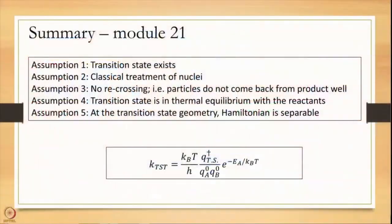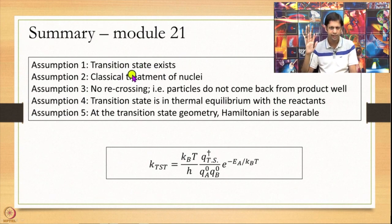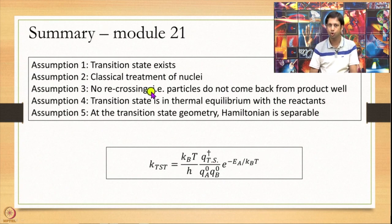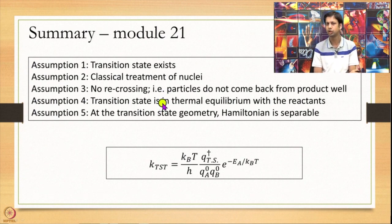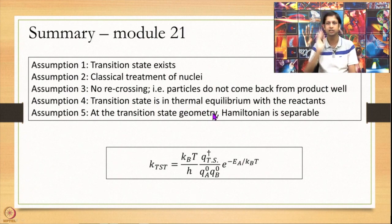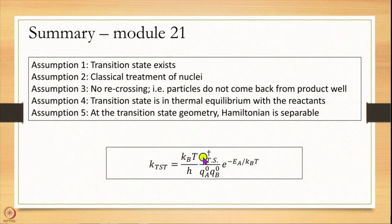In summary, we have made 5 assumptions in deriving transition state theory: (1) the transition state exists — this is the basis of the theory; (2) nuclei are treated classically; (3) there is no recrossing — once you go from transition state to product you do not come back, which is one of the most serious assumptions; (4) the transition state is at thermal equilibrium with reactants, which is usually a very good assumption; and (5) at the transition state geometry, the Hamiltonian is separable along the reaction coordinate and all perpendicular coordinates. Under these five assumptions, the rate constant is given by k = (k_BT/h) × (Q_TS†/(Q_A°·Q_B°)) × exp(−E_A/k_BT), where partition functions are per unit volume.